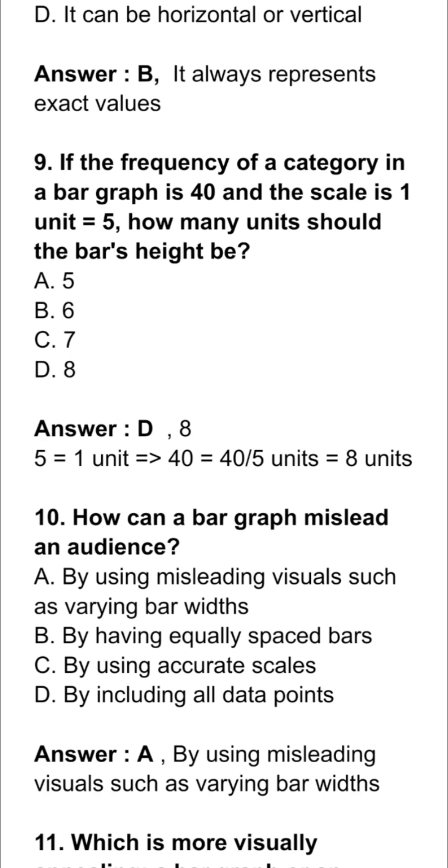Question 9. If the frequency of a category in a bar graph is 40 and the scale is 1 unit equals 5, how many units should the bar's height be? Option D is correct. 8. 5 equals 1 unit. It means 40 equals 40 upon 5, that is 8 units.